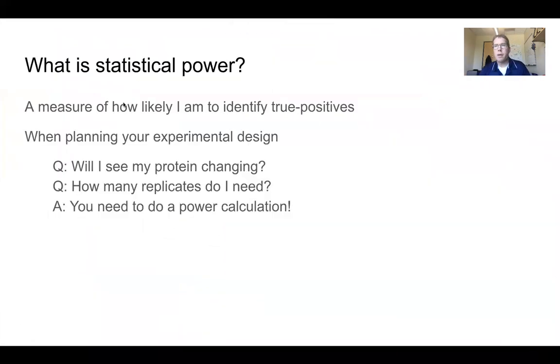So statistical power is the probability that you will detect a true positive in your data set. This means, often for us, in comparing group A and group B, we want to know things that truly are changing between group A and group B. So you're probably planning your experiment and thinking, will I see the protein I care about changing? You might be thinking, how many replicates do I need? The answer to both these questions is, you need to do a power calculation.